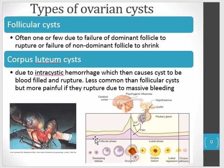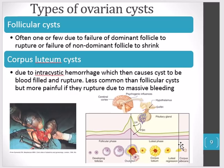The other type is a corpus luteum cyst. Normally, if a woman does not become pregnant, the corpus luteum degrades into the corpus albicans. With a corpus luteum cyst, the corpus luteum persists and fills with blood — called an intracystic hemorrhage — eventually rupturing. These are less common, and with rupturing they can lead to significant bleeding and pain.